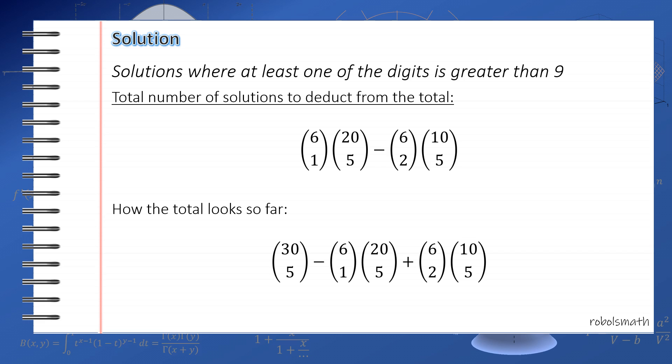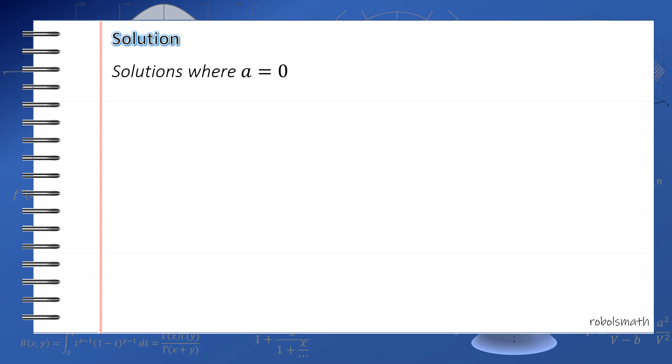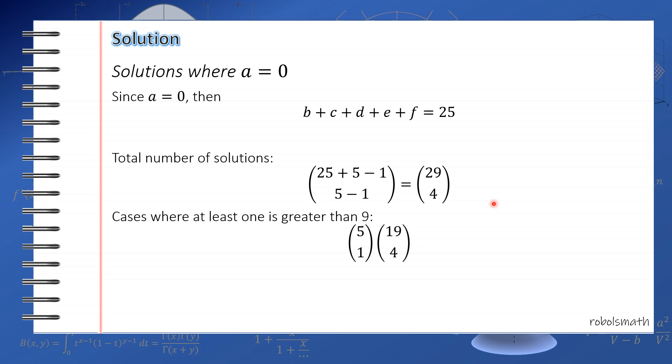So, the other case, where a equals 0, is fairly easy. Very similar to what we did in the earlier part of the video. So essentially, what we're doing here is treating it as if there are only 5 variables. So, if a equals 0, then b plus c plus d plus e plus f equals 25. Total number of solutions is 29 taken 4. Again, stars and bars. Then, from this total, we eliminate 5 taken 1 times 19 taken 4. This is the same as what we did earlier. I will not repeat the solution because it's exactly the same. The idea is you let b equal b prime plus 10. And then, you use the substitution.